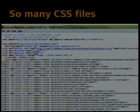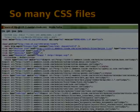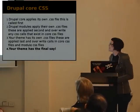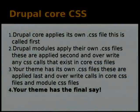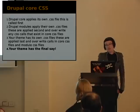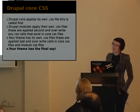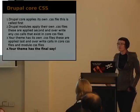CSS files: there are so many CSS files called in Drupal 7. Drupal core applies its own CSS files first, Drupal modules then apply their own second, and your theme applies its own CSS files last — they overwrite everything. So if core has H1 at font-size 1.6em, a module.css overrides it at 2em, and your theme writes it at 3em, H1 will always be 3em. Your theme always wins.